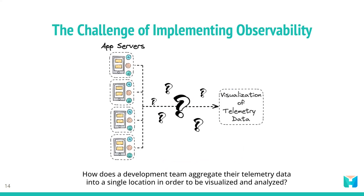Knowing that observability is important is one thing; making software systems observable is another. How does a development team aggregate their telemetry data into a single location in order to be visualized and analyzed? The solution to this problem involves solving several smaller problems — let's examine each of them.